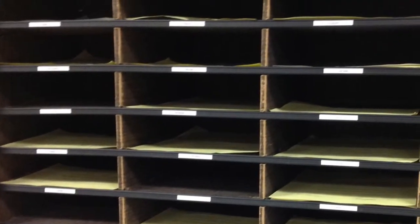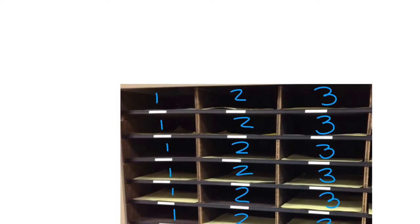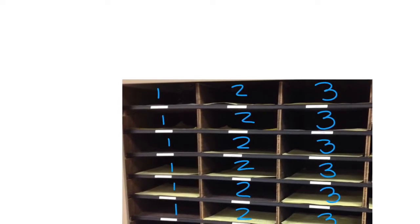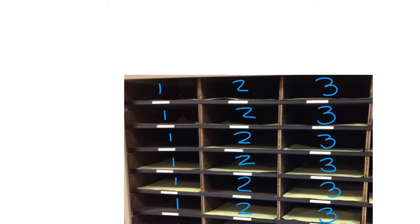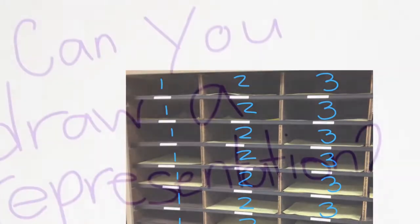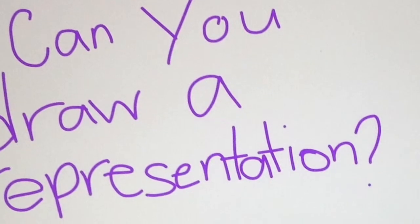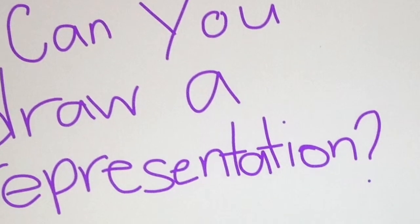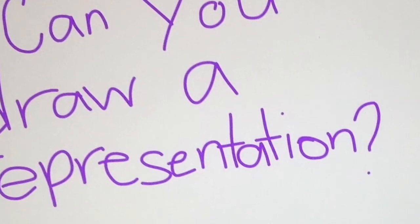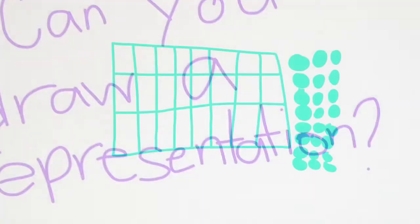This is three groups of eight. Can you see three groups of eight? Can you draw a representation? This is a representation of three groups of eight.